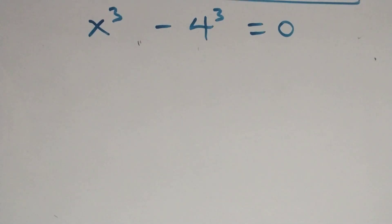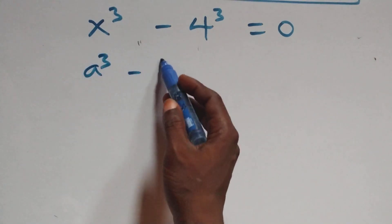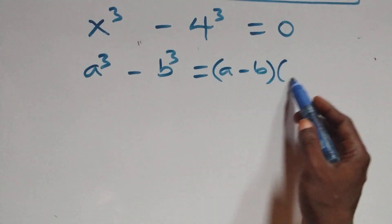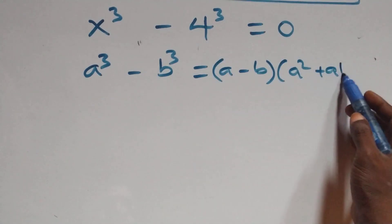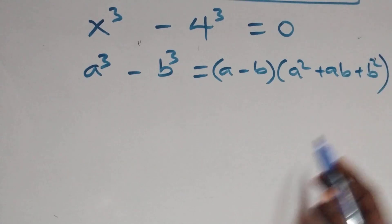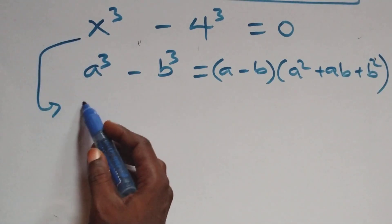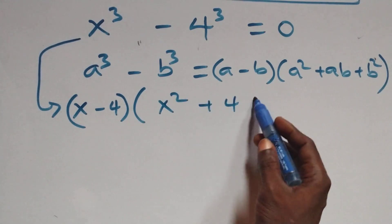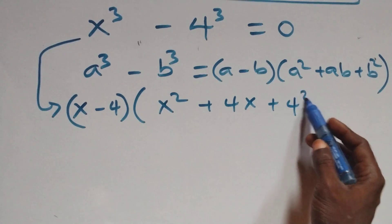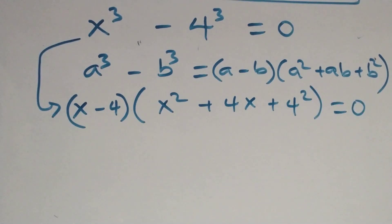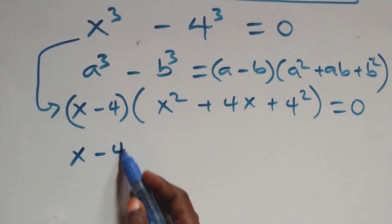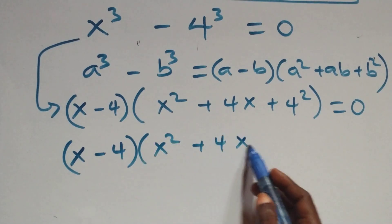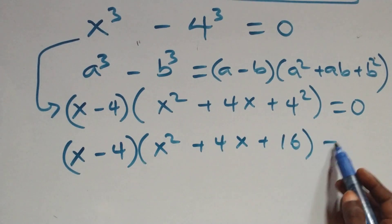Solving the second case: x cubed minus 4 cubed equals 0. Using the difference of cubes formula, a cubed minus b cubed equals a minus b times a squared plus ab plus b squared. All we have becomes x minus 4 times x squared plus 4x plus 16 equals 0.